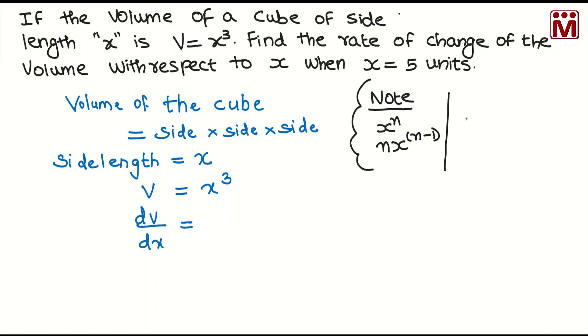dv by dx equal to, so x cube differentiate, 3x to the power 3 minus 1, that is equal to 3x square. So here I can write 3x square.